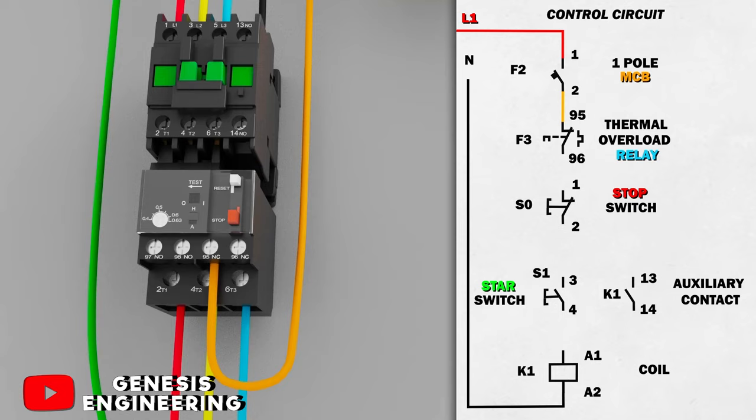We are connecting first to the normally closed contact 95 and 96 of the thermal relay because we are making a series connection with the contactor coil. In the event of an overload in the motor, the relay will open contact 95 and 96 and will interrupt the power supply to the contactor coil, and the contactor will shut off the motor.